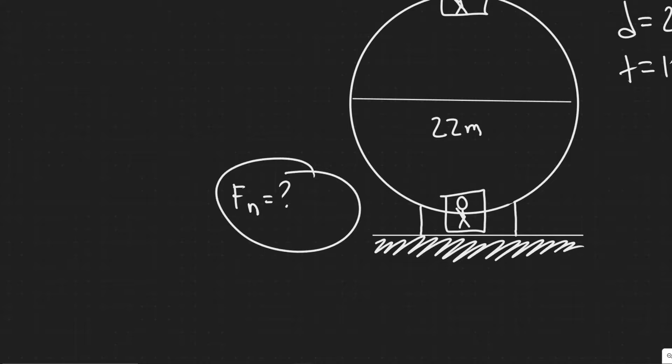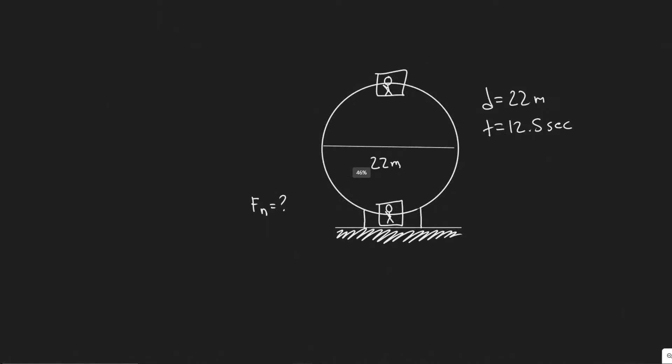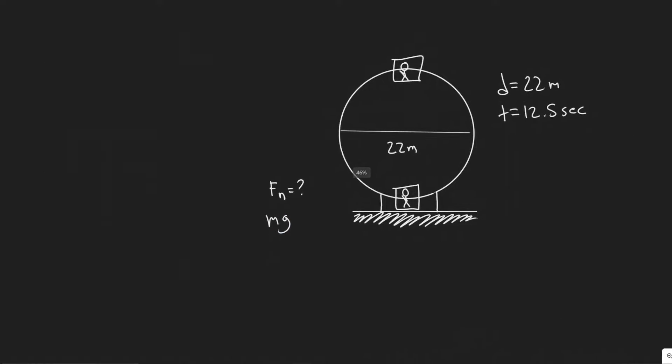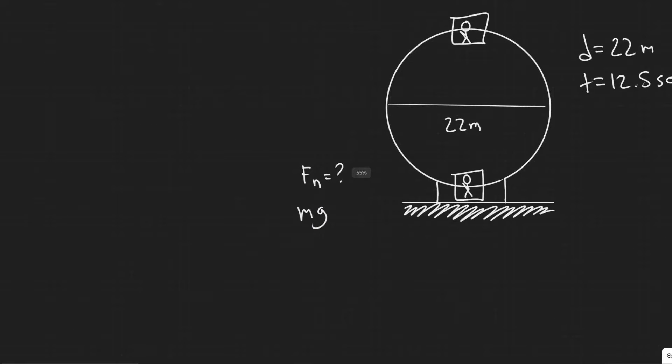And it's basically your weight, like it can change, right? Because your real weight is always your mass times gravity, but your apparent weight can change depending on the scenario. So when they're talking about your apparent weight to your real weight, they're basically talking about the ratio of F sub n divided by mg.